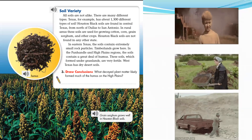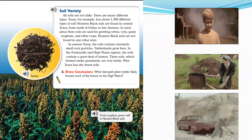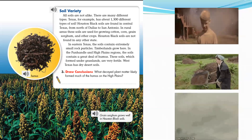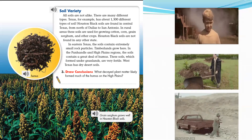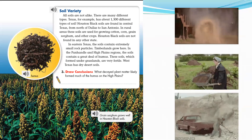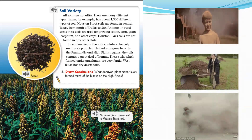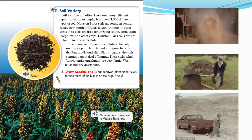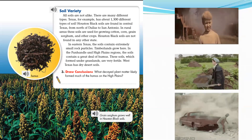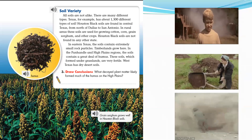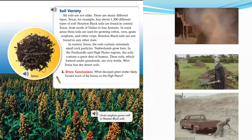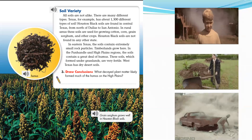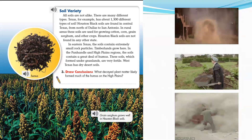In eastern Texas, the soils contain extremely small rock particles, and timberlands grow here. In the Panhandle and High Plains region, the soils contain a great deal of humus. These soils, which formed under grasslands, are very fertile. West Texas has dry desert soils, and these are examples here of the different soils.